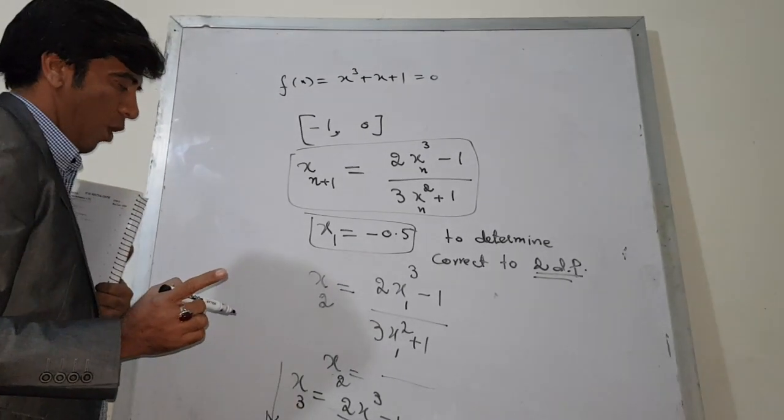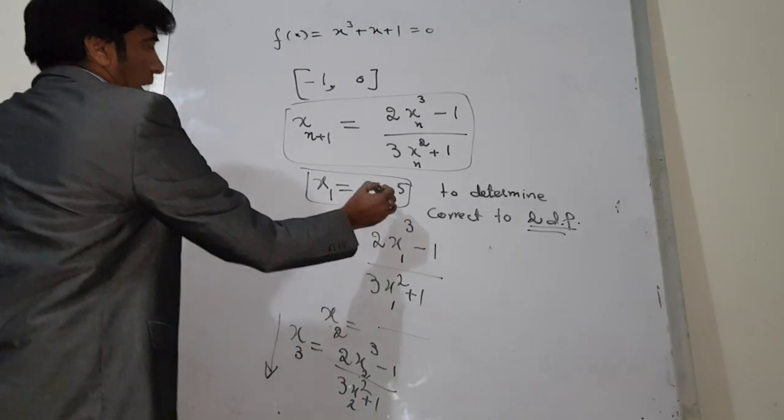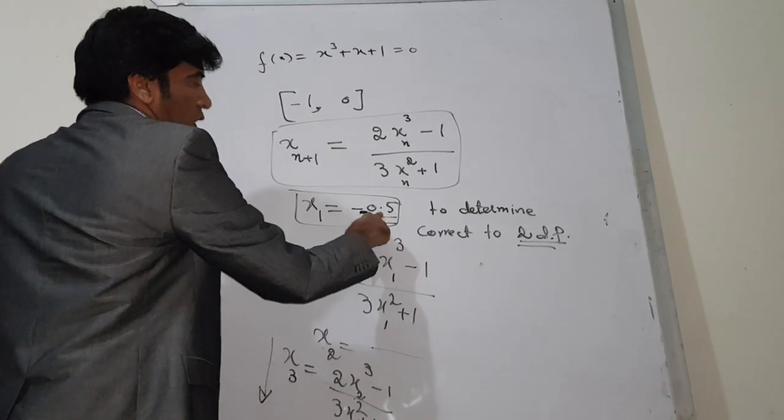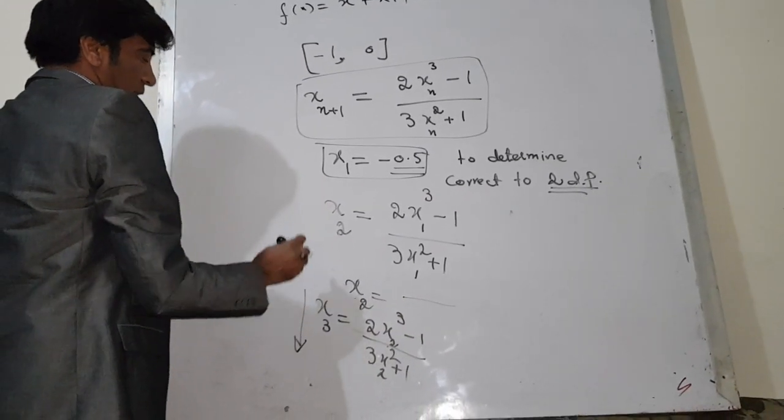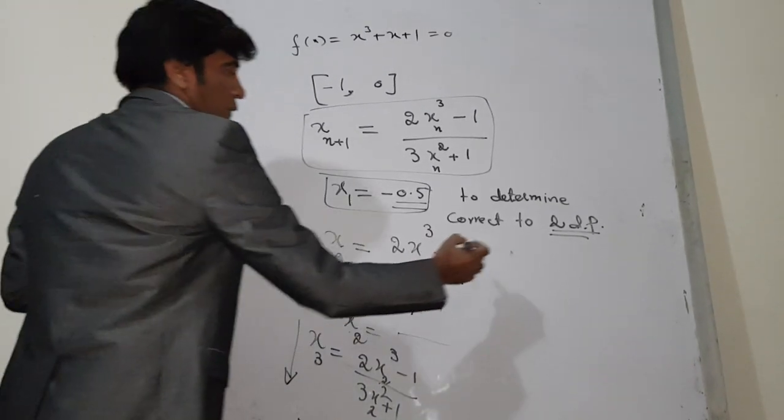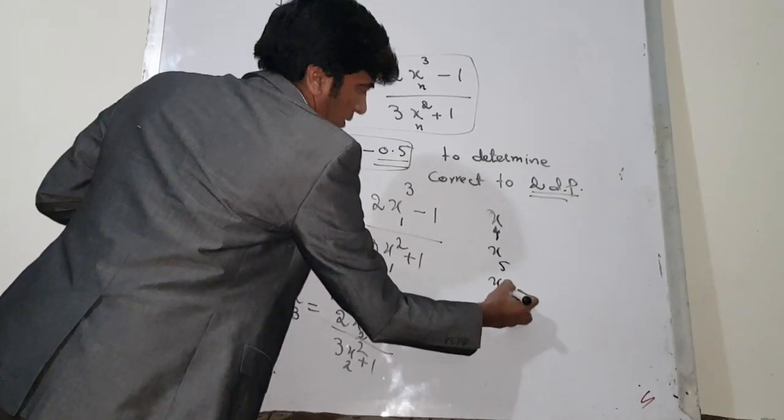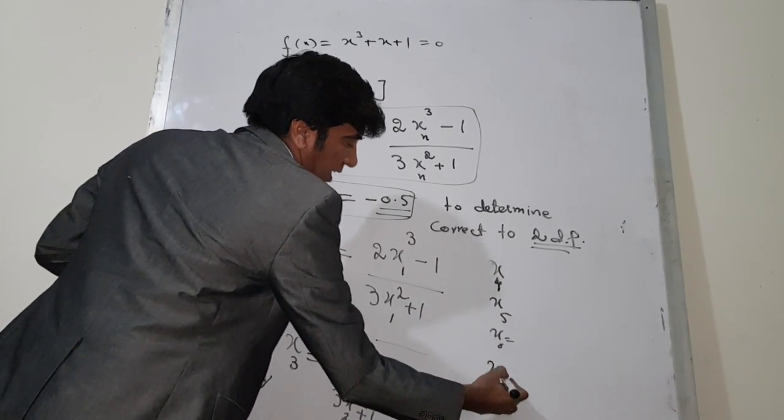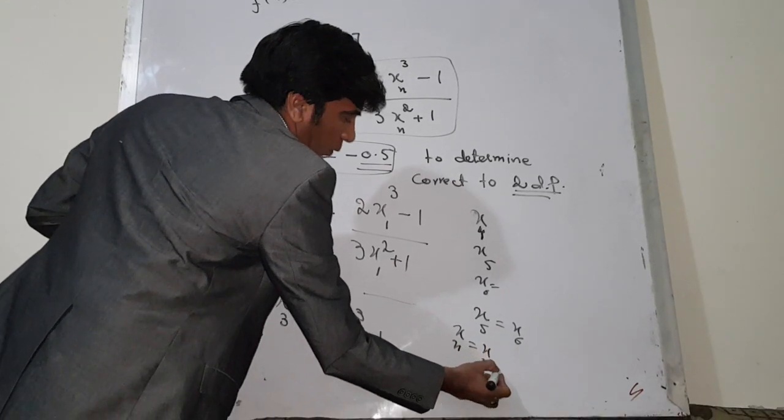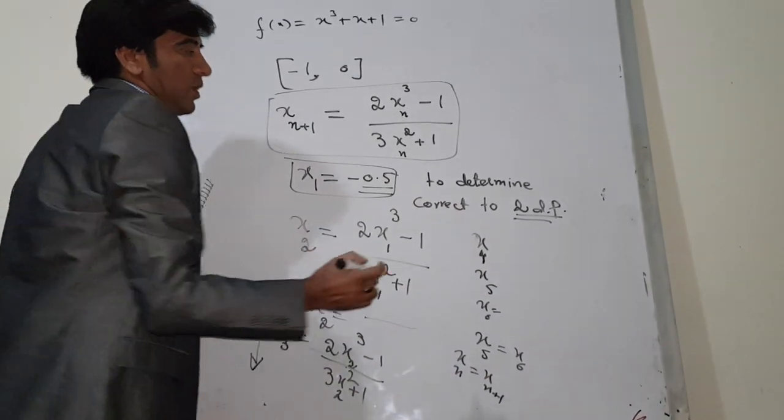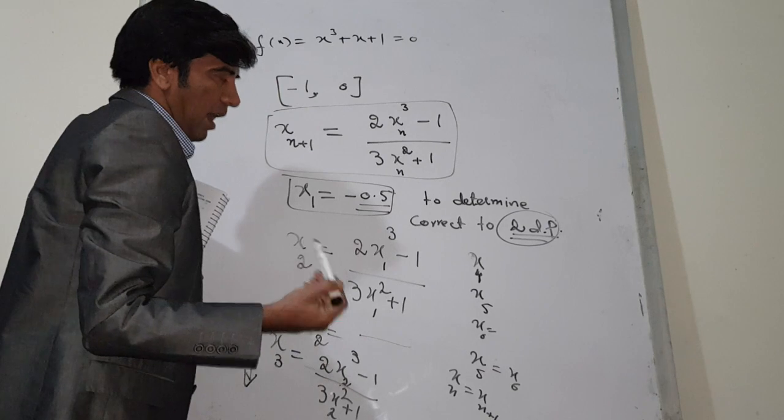So this way the method goes on. You will perform the calculation until after doing three or four steps, you will see that x₄, x₅, x₆, any two consecutive values, x_n and x_{n+1}, give the same answer correct to two decimal places. That would be your final answer.